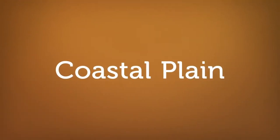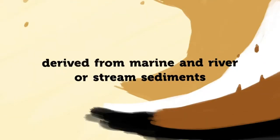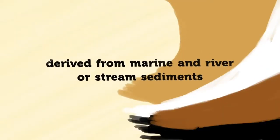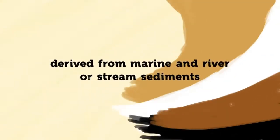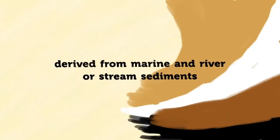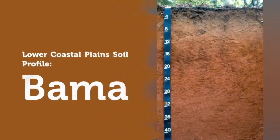Coastal Plain. Most of the soils in the area derived from marine and fluvial sediments eroded from the Appalachian and Piedmont Plateaus. The area consists of upper and lower coastal plains.